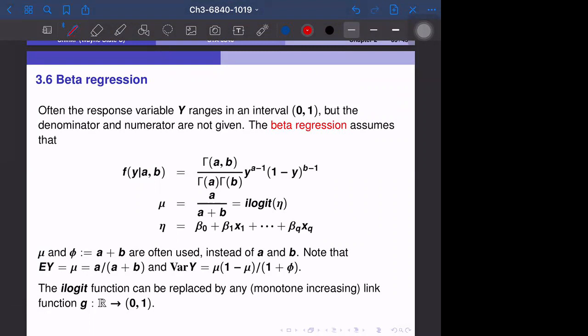Hi, the last section is beta regression. The idea is similar to quasi-binomial, but with some differences.